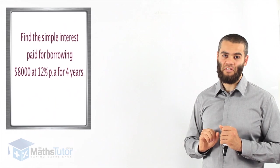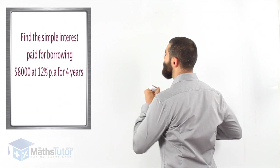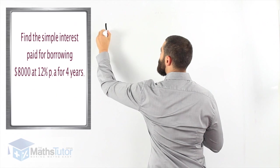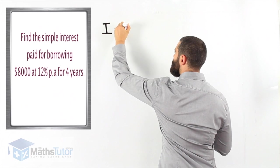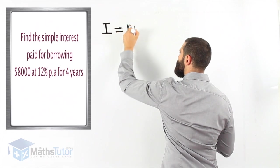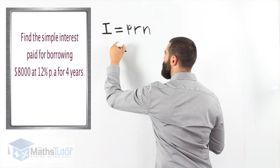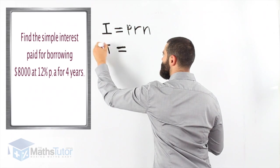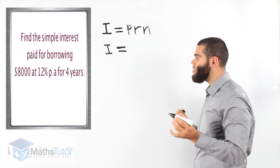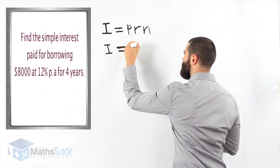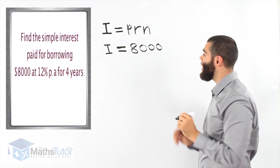Now, let's use the formula to work this out. We always write the formula down. The formula states, I equals PRN. I is the interest. The principal is the amount borrowed. How much was borrowed? $8,000. That's how much money was borrowed from the bank.